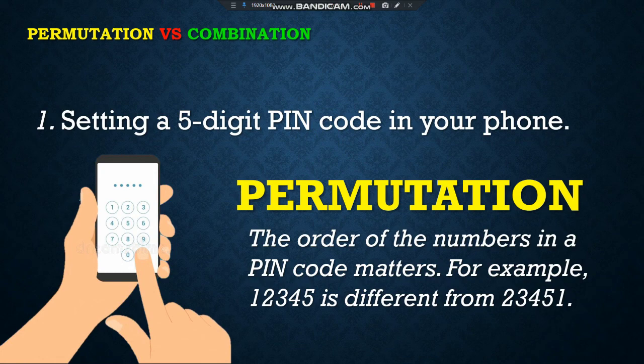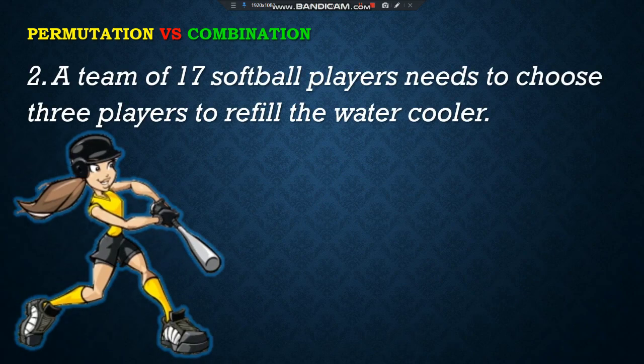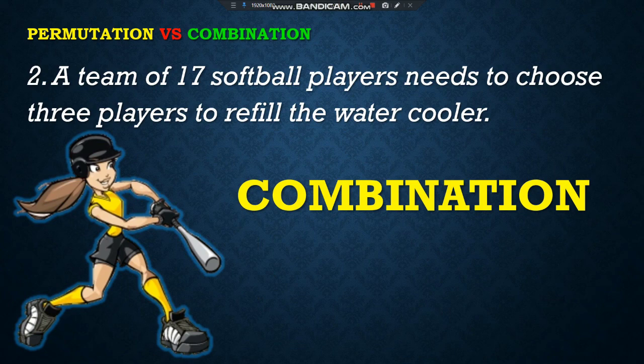For example, 1-2-3-4-5 is different from 2-3-4-5-1. Let's take another example. A team of 17 softball players needs to choose 3 players to refill the water cooler. Permutation or combination? It is a combination.